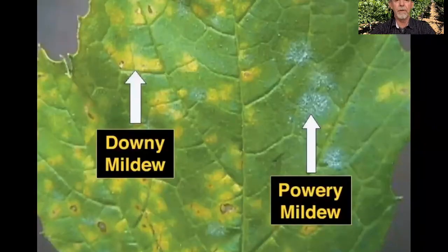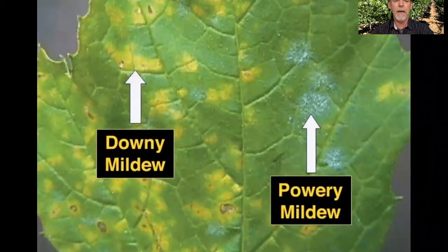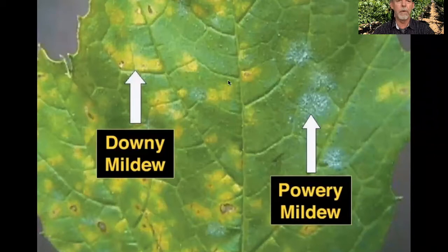In this slide you can see the difference between downy mildew, which predominates on the east coast, and powdery mildew, which predominates on the west coast. You can see the white powdery spots on the leaves.